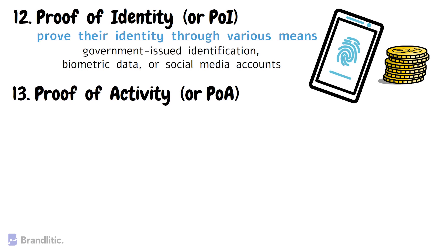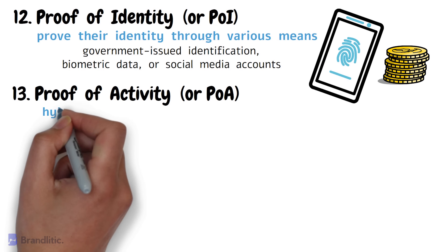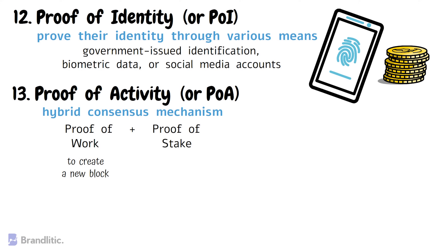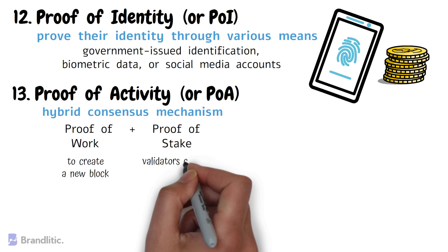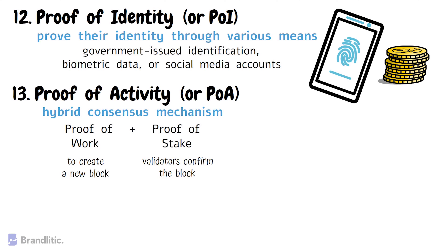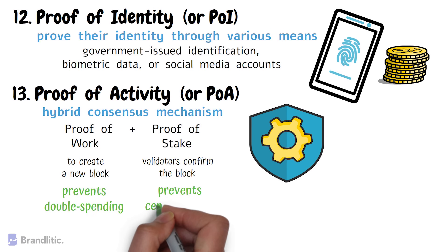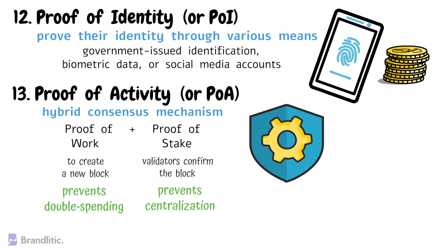Number thirteen: Proof of Activity. Proof of Activity is a hybrid consensus mechanism that combines Proof of Work and Proof of Stake to ensure the security and reliability of the network. Miners first perform Proof of Work to create a new block, and then validators confirm the block using Proof of Stake. This ensures the network is secure and efficient, as Proof of Work prevents double spending and Proof of Stake encourages participation and prevents centralization. Proof of Activity helps improve the speed and scalability of blockchain networks while still maintaining a high level of security and reliability.